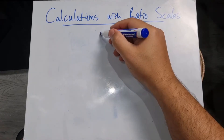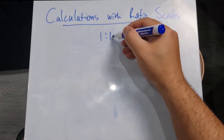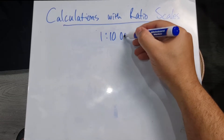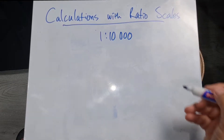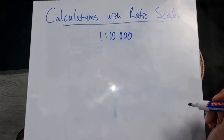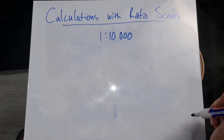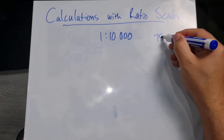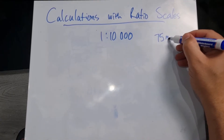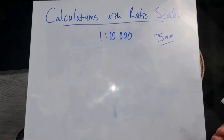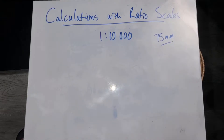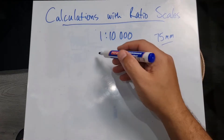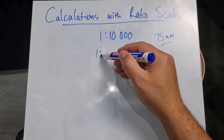Let's look at another example with a ratio of one is to 10,000 and they're mentioning that the map measurement is now 75 millimeters — not even centimeters. They want us to work out the distance in reality, so I'm going to use the same method.